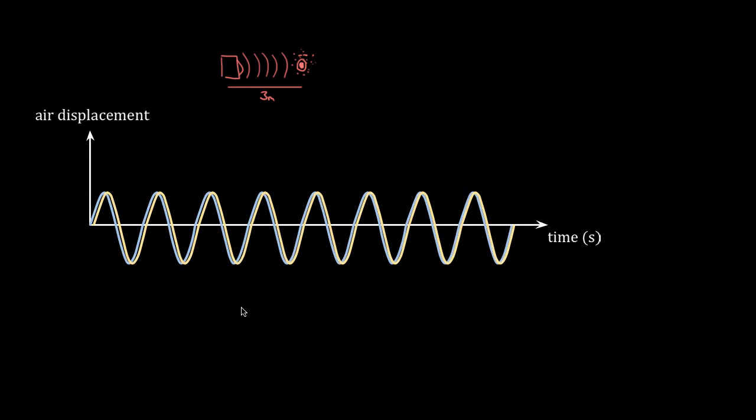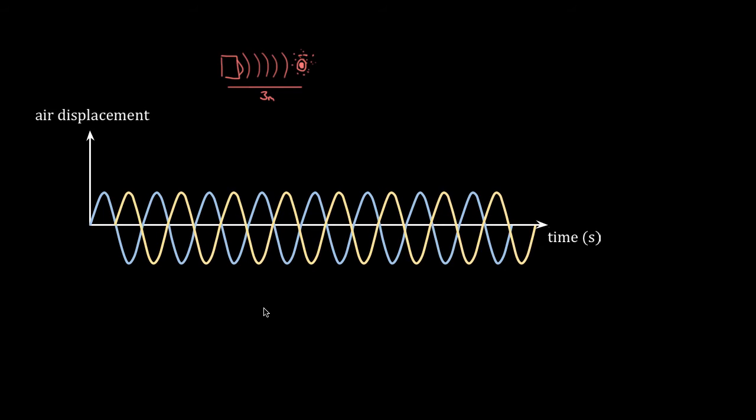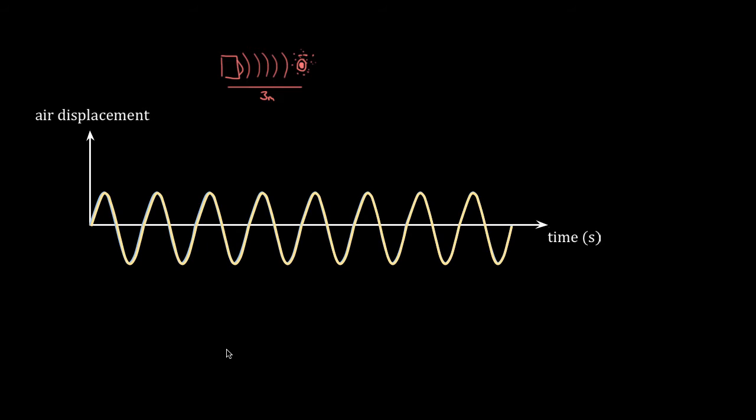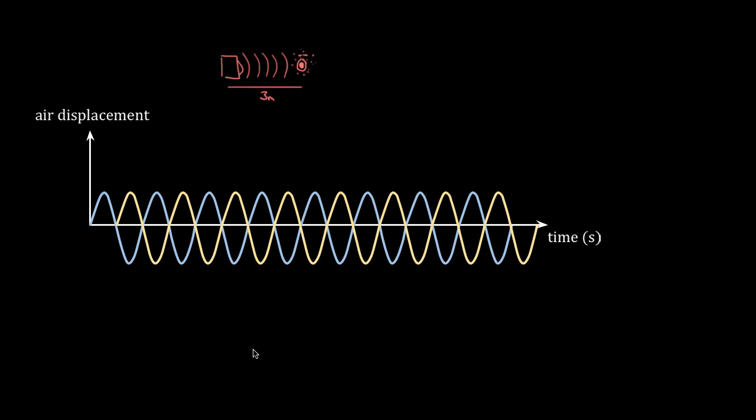And if I moved that speaker forward a little bit, or I switched the leads, if I found some way to get it out of phase so that it was destructive interference, I'd hear a softer note. Maybe it would be silent if I did this perfectly. And it would stay silent or soft the whole time. So if you overlap two waves that have the same frequency, the same period, then it's going to be constructive and stay constructive, or be destructive and stay destructive.